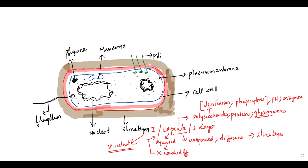Then coming onto the second layer — the cell wall, which I have drawn here with red color. Everyone knows, even in plants, that the cell wall gives a definite shape. So here also your cell wall is giving a definite shape to the bacteria. Secondly, it is going to provide a second level of protection. The cell wall of bacteria is made up of a polymer of peptidoglycan — you can also call this murein.